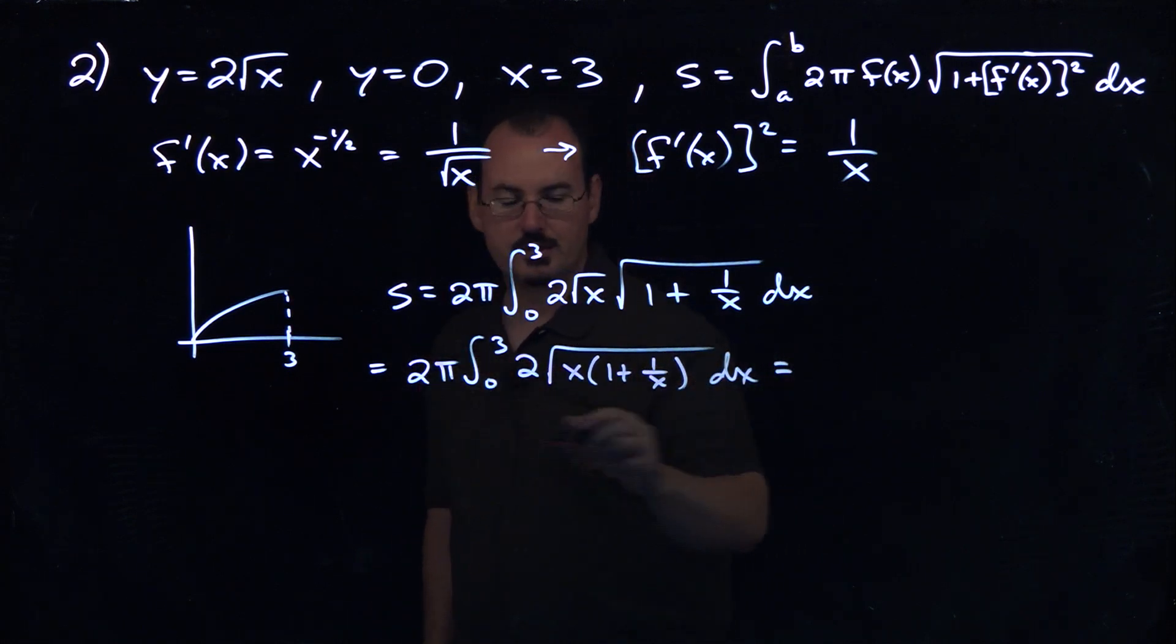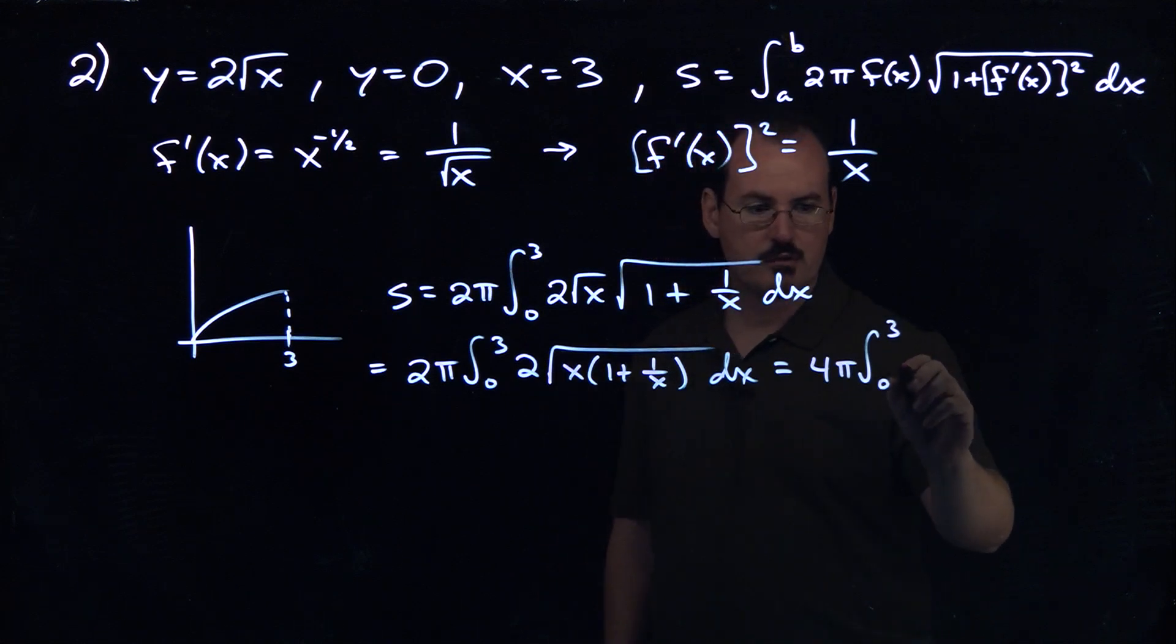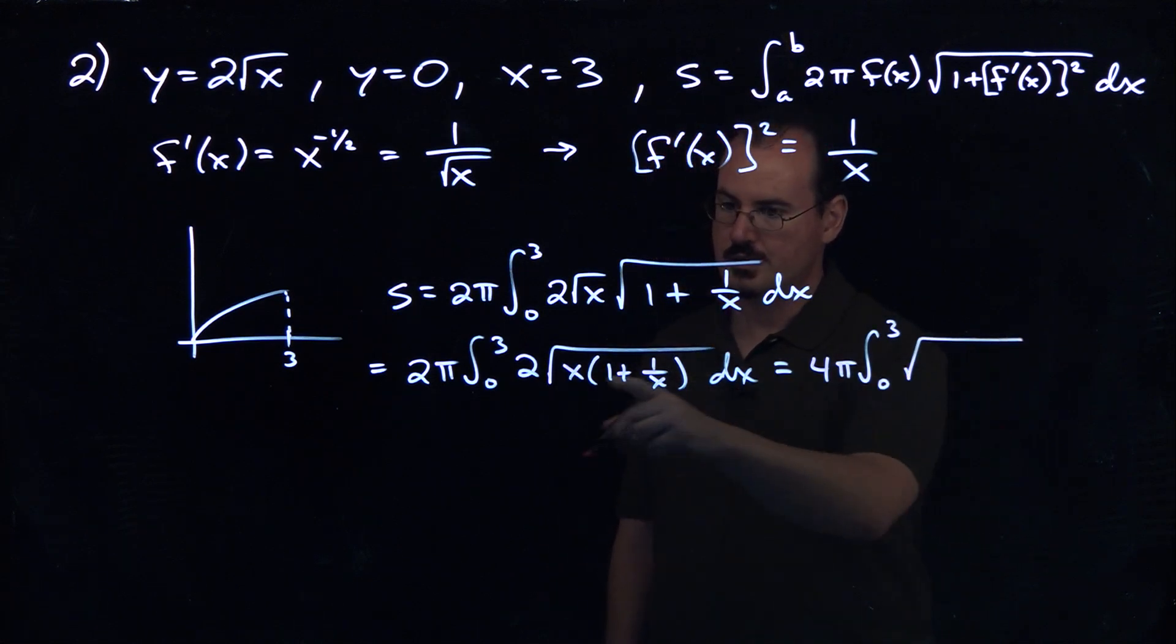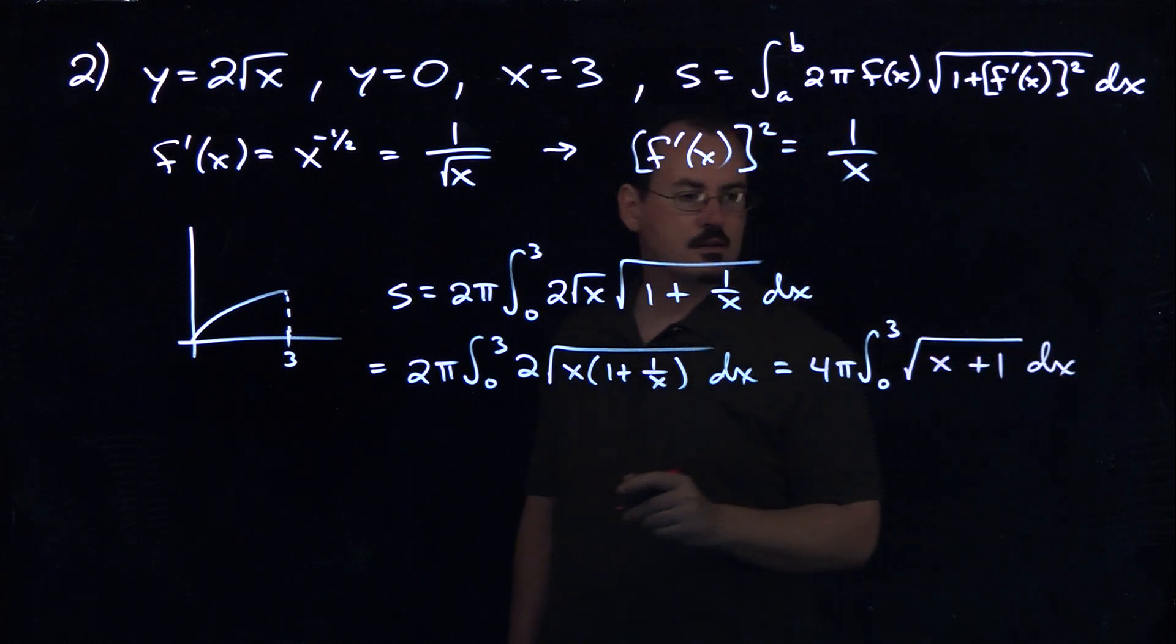And then if we combine the two constants, we'll get 4 pi integral from 0 to 3 of the square root of, that's just, when I distribute that x there, I'm just going to get x plus 1.